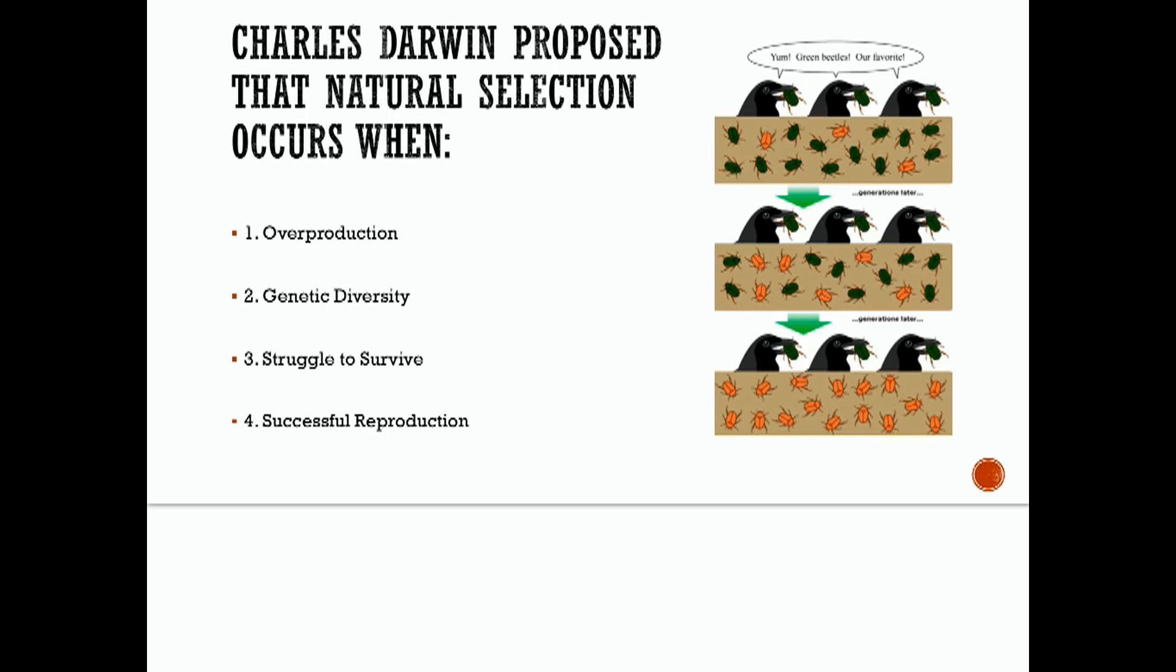Some organisms have favorable traits that are well suited to their immediate environment. Organisms with this advantage are more likely to thrive, to reproduce, and to pass these traits on to future generations than organisms without such traits. This process is known as natural selection. Charles Darwin proposed that natural selection occurs when the following criteria are met.